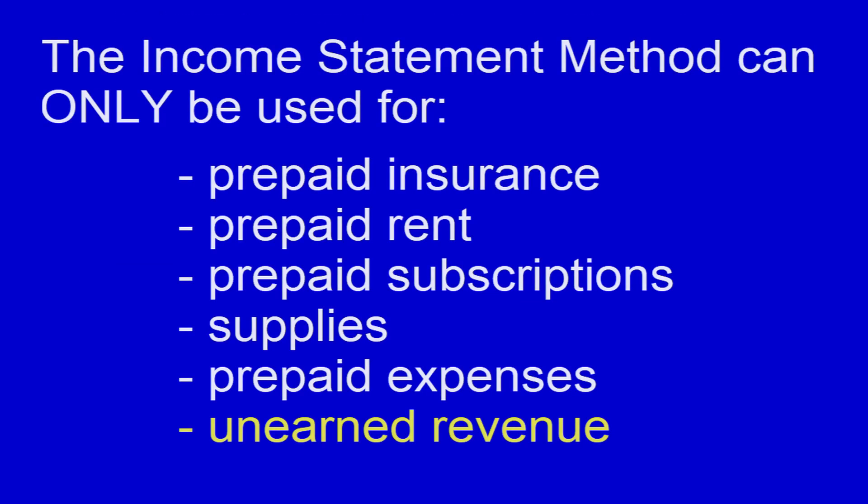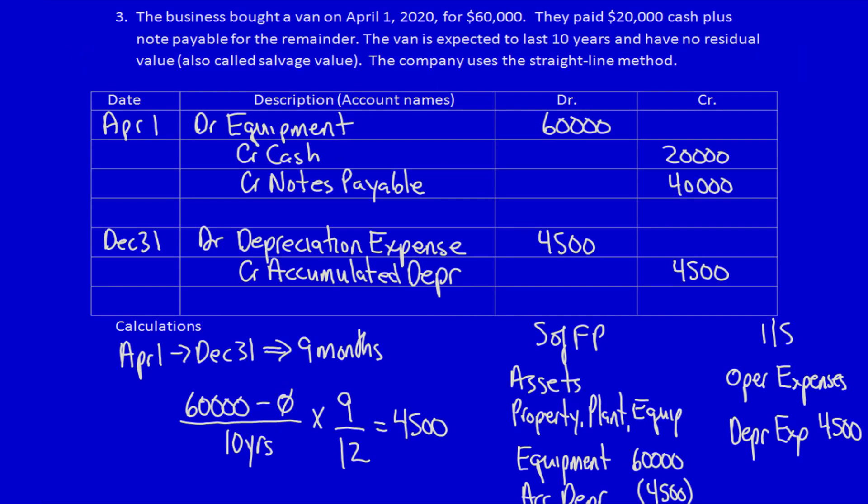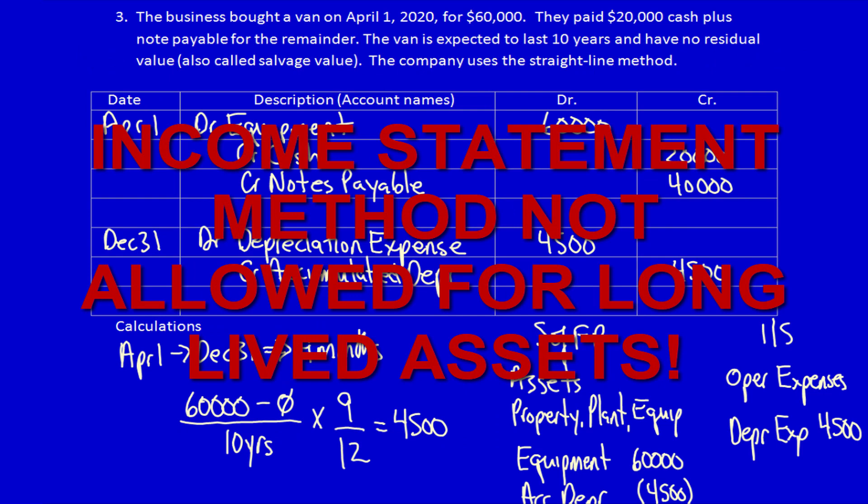The income statement method only works on current assets and current liabilities that require adjusting entries. So you can use the income statement method on things like prepaid rent, prepaid insurance, supplies, prepaid expenses, prepaid subscriptions. You can also use it for unearned revenues, where a customer paid you in advance and you're going to provide services over time.